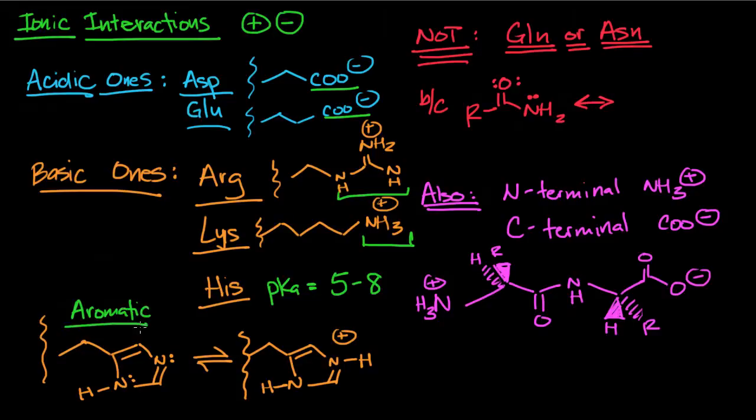You can clearly see that the electrons here can participate in aromaticity but the electrons on this nitrogen on the right can also get protonated and then if it's protonated you have a positive charge and it's participating in ionic interactions. Now less than 50% of the histidine is going to exist in the protonated state at physiological pH because the pKa is between 5 and 8 and physiological pH is slightly above 7.